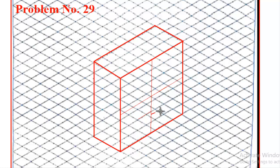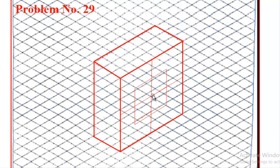Do the same thing here as well — one box and slightly less than that — to draw the remaining lines of the frame. After completing the square frame, we can delete the mid-construction lines.